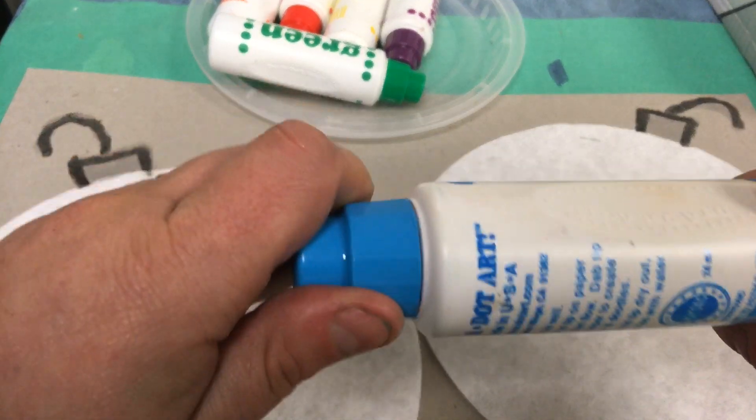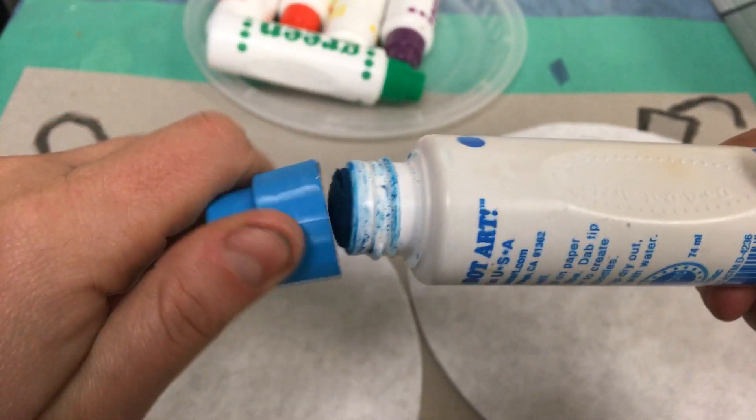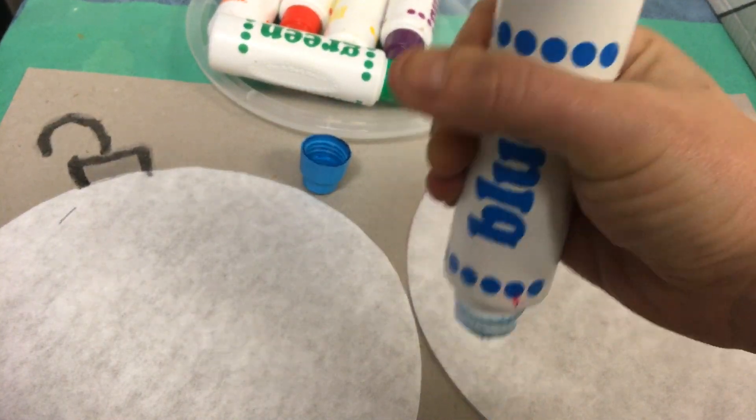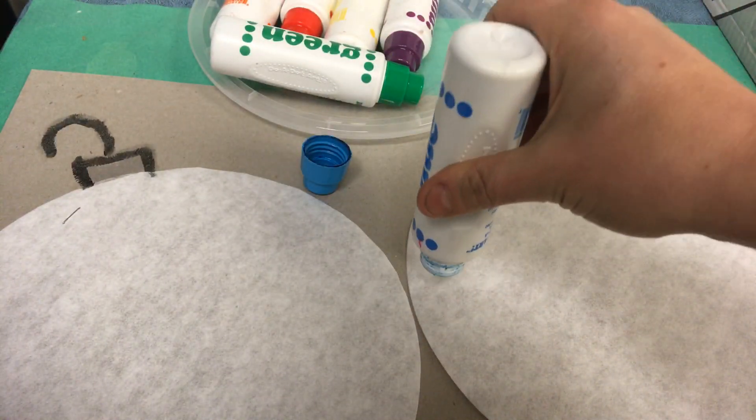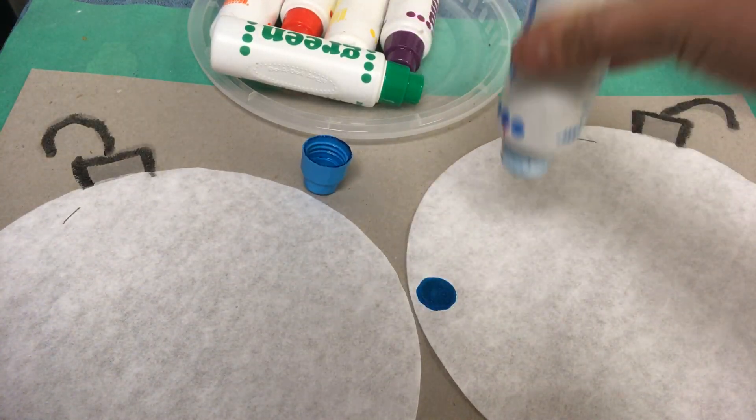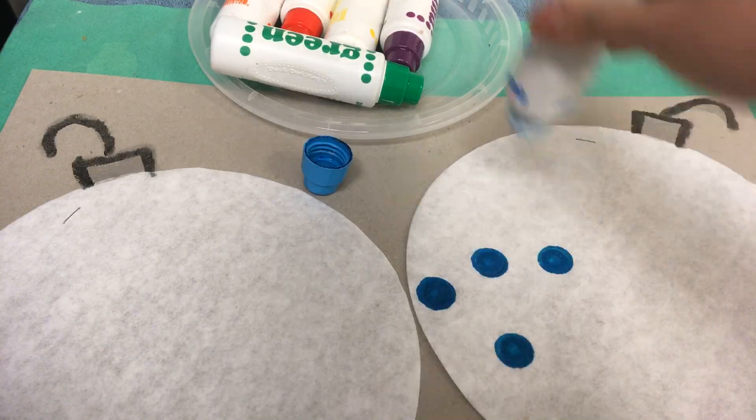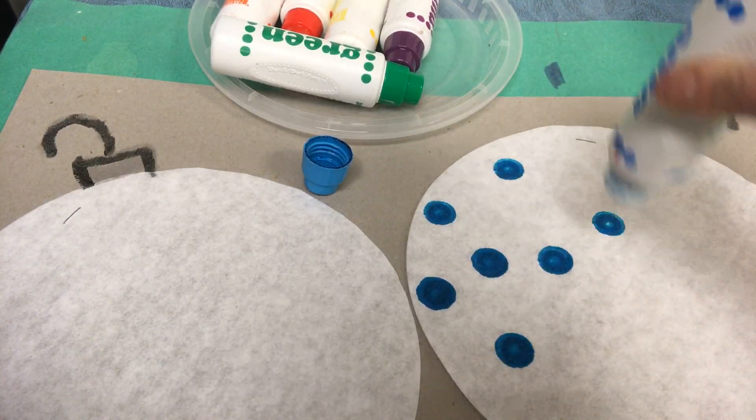Choose a color, twist off the cap, and you're going to hold it like this, okay? Just like this. And you're going to press, press, just like that. We're going to decorate our whole ornament.